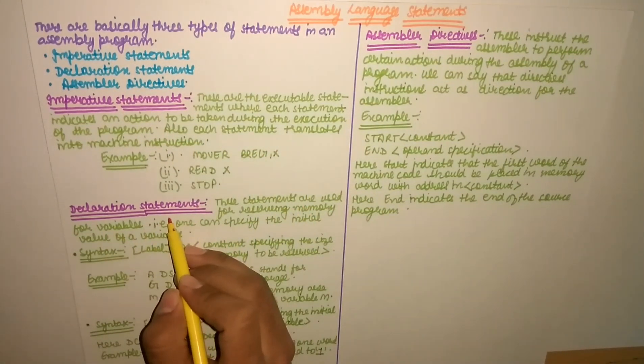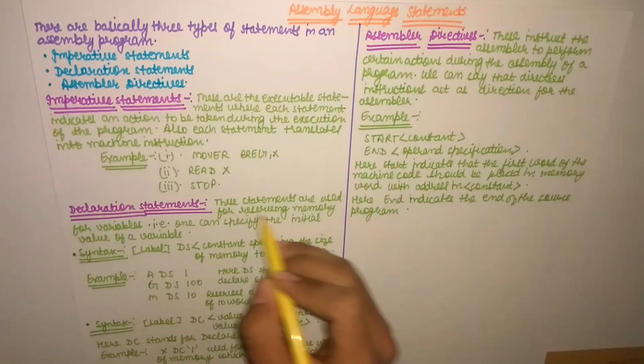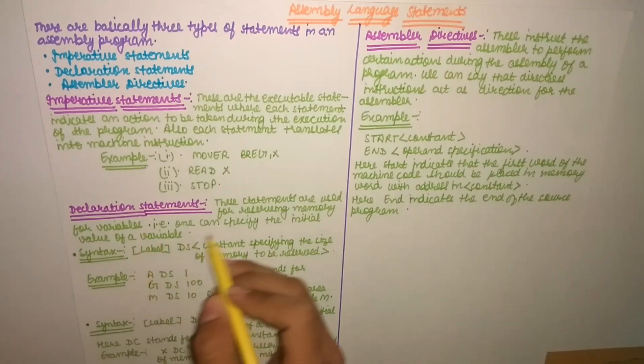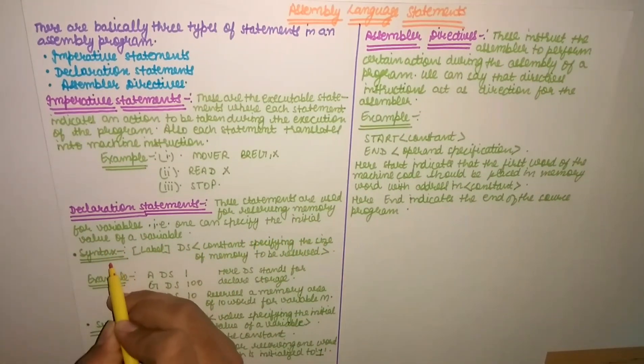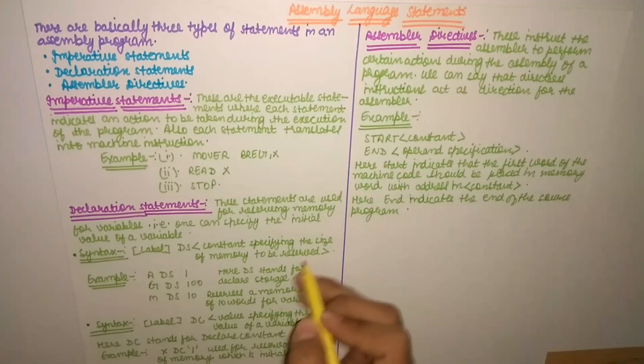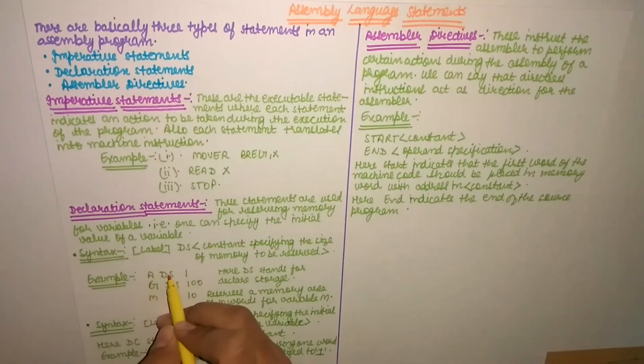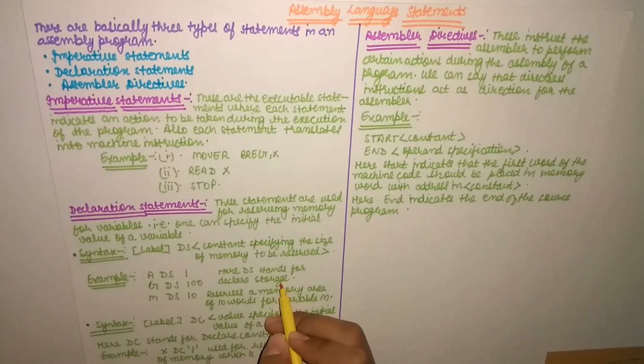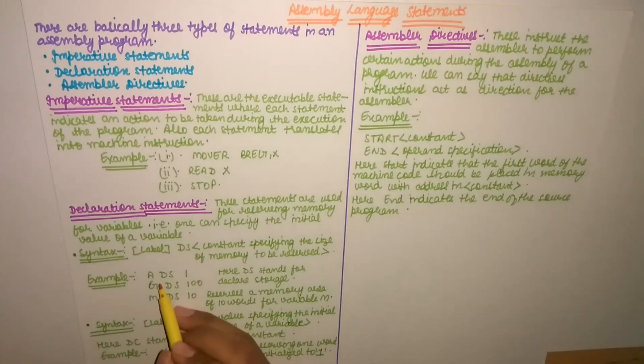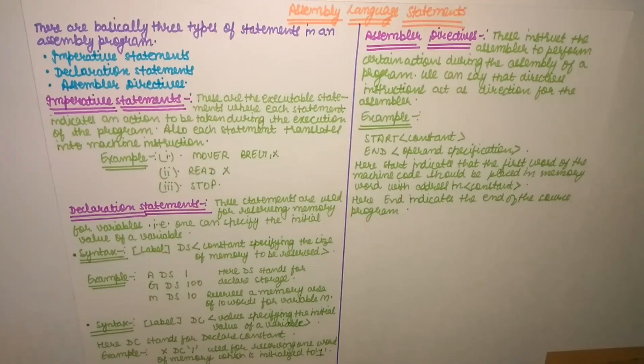The next type of statements are declaration statements. There are two types of statements: DS and DC. Declaration statements are used for reserving memory for variables. One can specify the initial value of a variable. The syntax is: label, DS, and after that a constant specifying the size of memory to be reserved. First label, then DS and the constant specifying the size of memory to be reserved. For example, A DS 1, G DS 100, M DS 10.